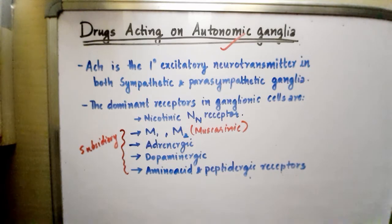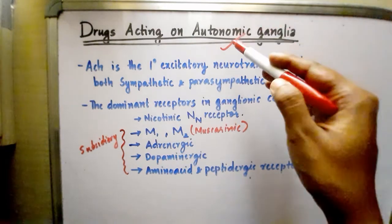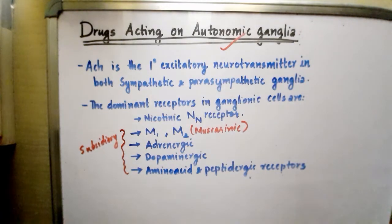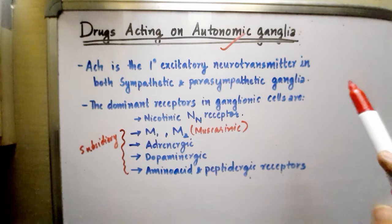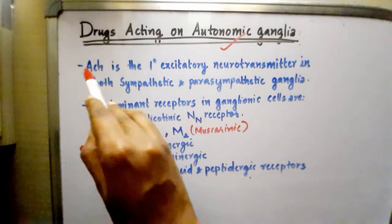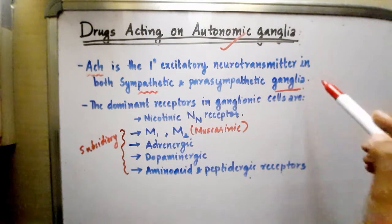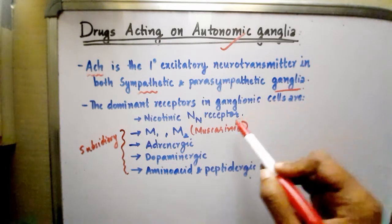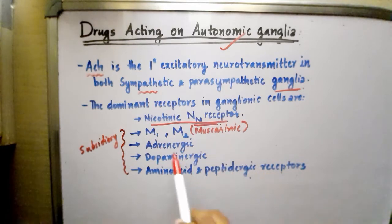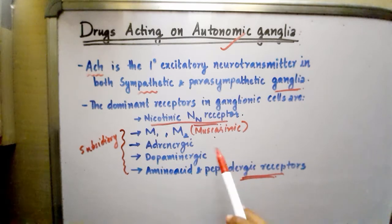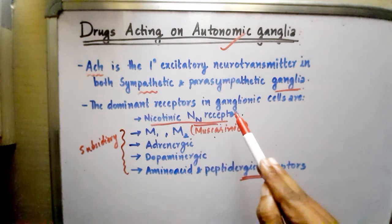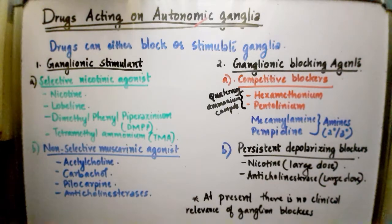Next is a small topic on drugs acting on autonomic ganglia. Autonomic ganglia are groups of nerve cell bodies in the autonomic nervous system, divided into sympathetic and parasympathetic types. Acetylcholine is the primary excitatory neurotransmitter in both sympathetic and parasympathetic ganglia. The dominant receptor in ganglionic cells is the nicotinic NN receptor, though it also has muscarinic M1, M2, adrenergic, dopaminergic, amino acid, and peptidergic receptors.